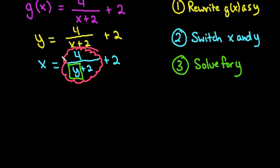So I'm going to bring the 2 to the other side and remember that when it changes sides it changes signs. So we really have x minus 2 equals 4 over y plus 2.